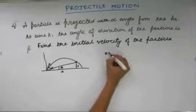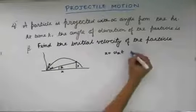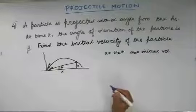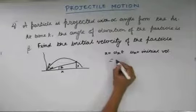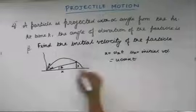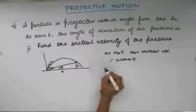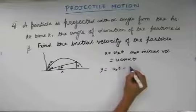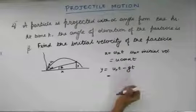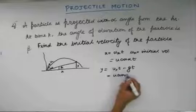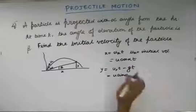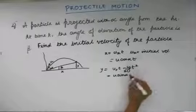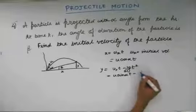The horizontal displacement x can be written as ux·t, where ux = u·cosα is the initial horizontal velocity. Similarly, the vertical displacement y is given by uy·t - ½gt², where uy = u·sinα is the initial vertical velocity. So y = u·sinα·t - ½gt². This is the equation of motion for a uniformly accelerated particle.